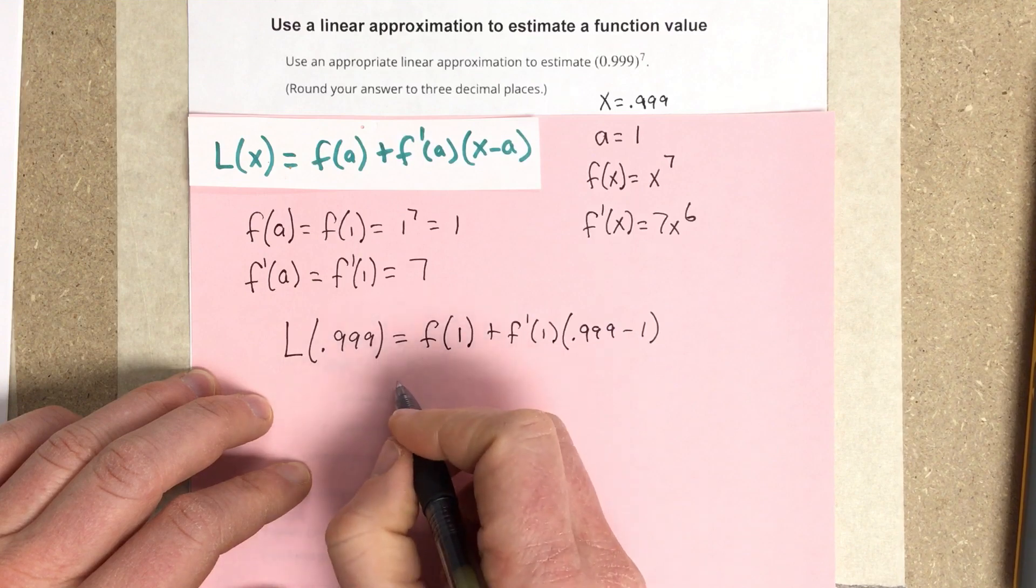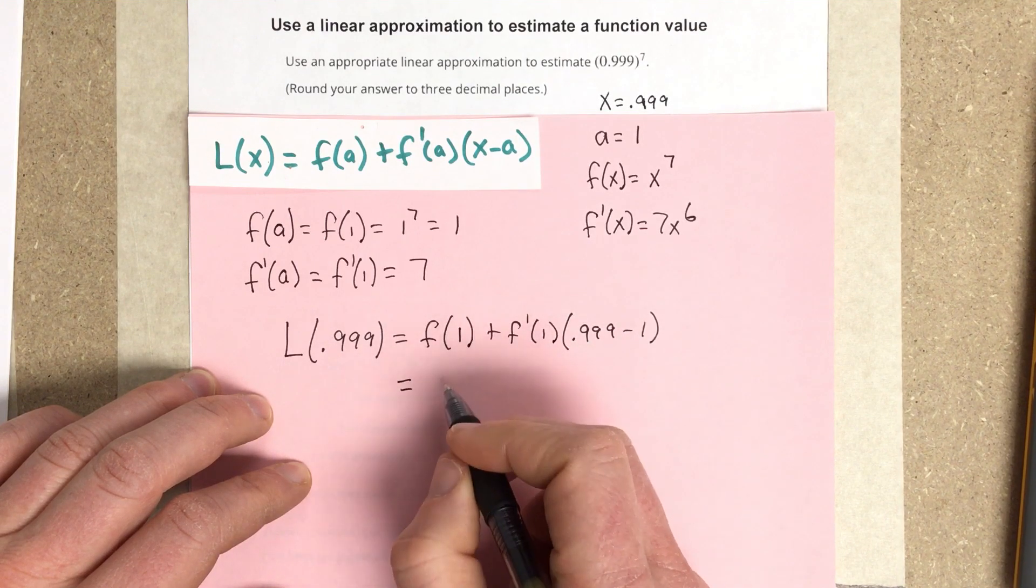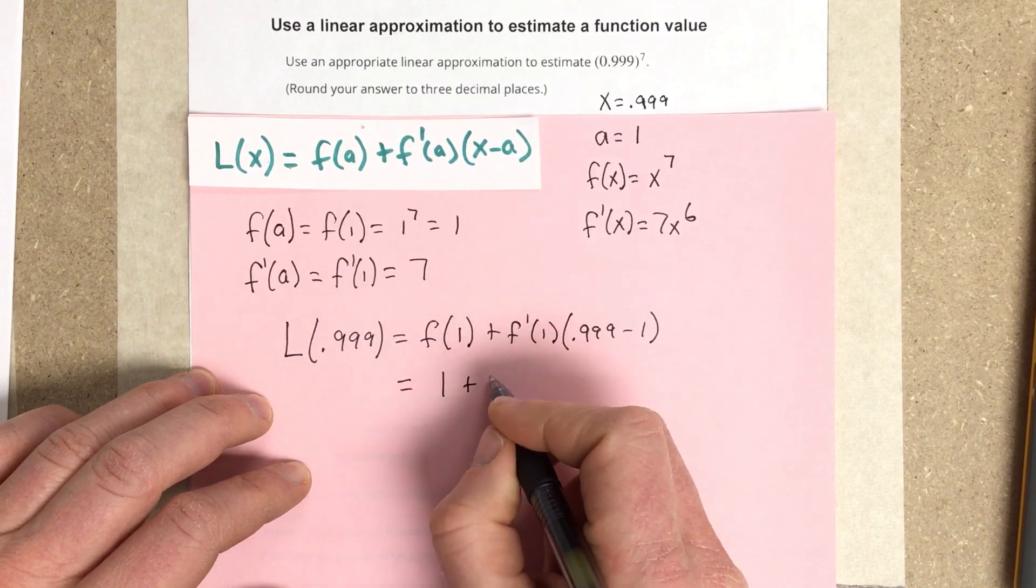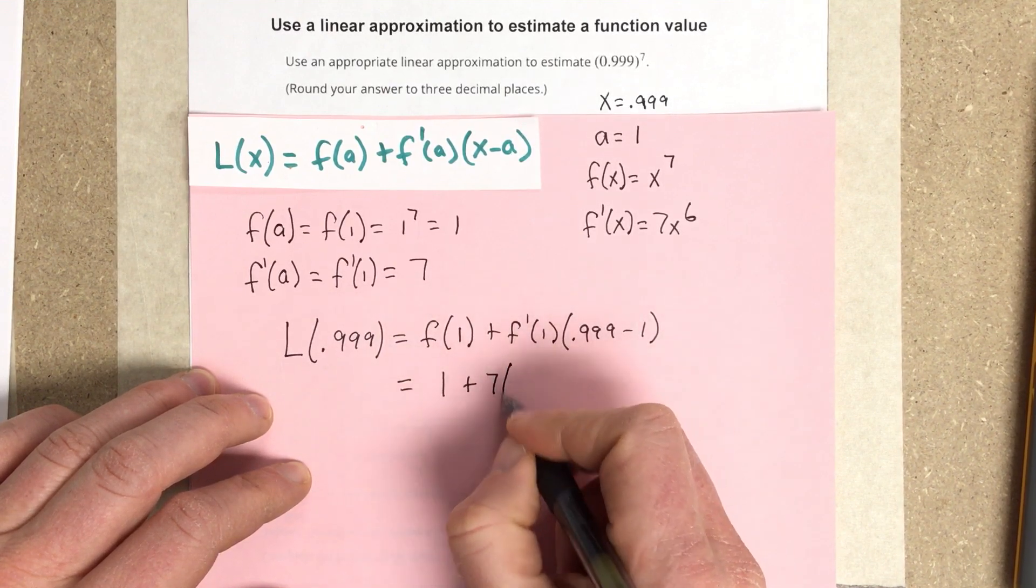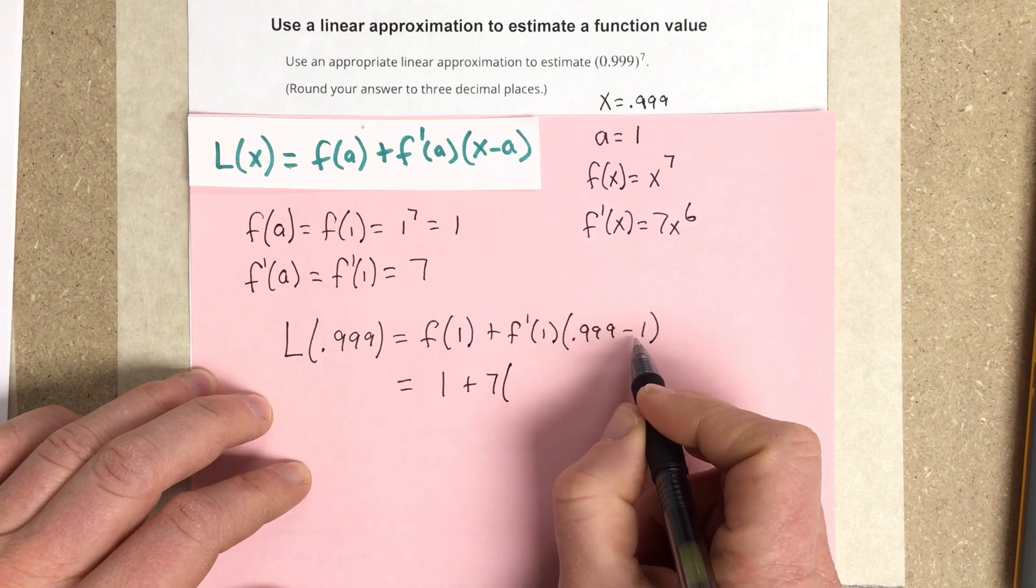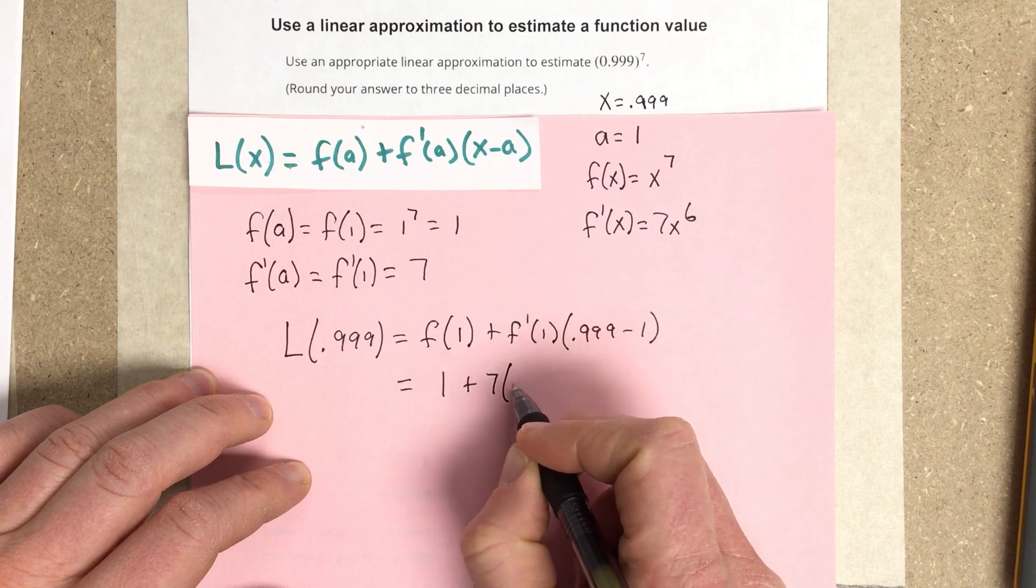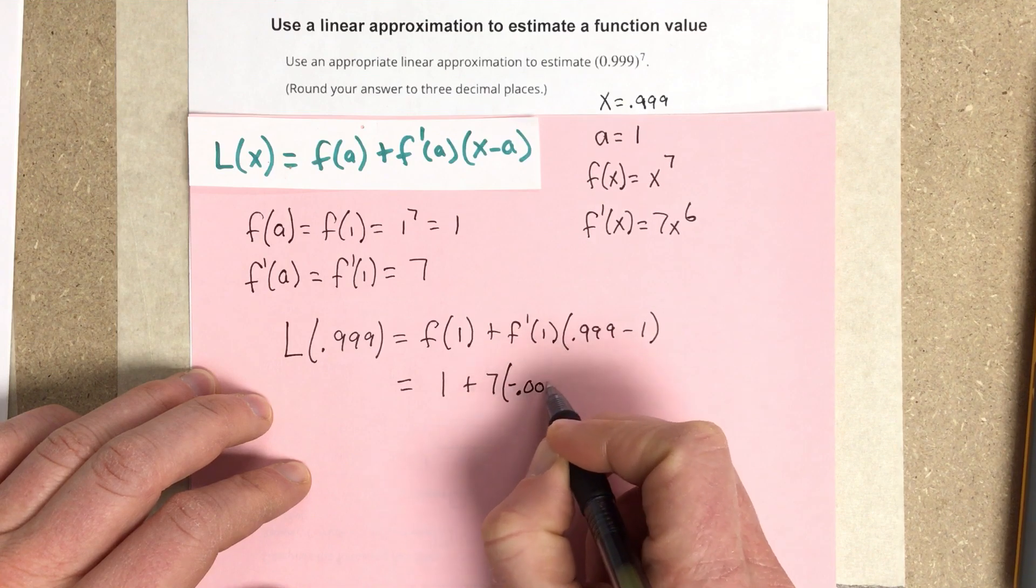So if I substitute here, f of 1 we already know is 1, plus f prime of 1, which is 7, times 0.999 minus 1 is actually negative 0.001.